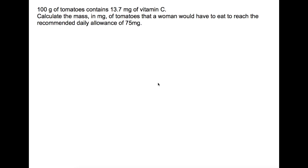So the first one we have here tells us a little bit about a topic. It says that 100 grams of tomatoes contains 13.7 milligrams of vitamin C. It then gives you some more information, so it tells you that a woman has a recommended daily allowance of around 75 milligrams, and you're to work out the mass of tomatoes that she would need to eat to be able to reach that recommended daily allowance.